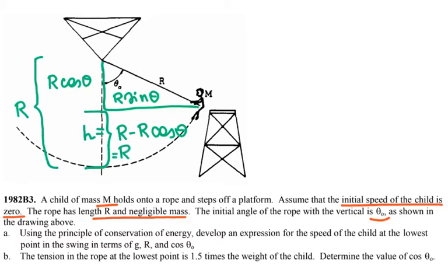So the child has, for part A, the child has some potential energy here and the potential energy final is equal to zero. The child has no kinetic energy initial because initial velocity is equal to zero.